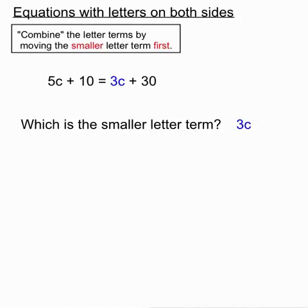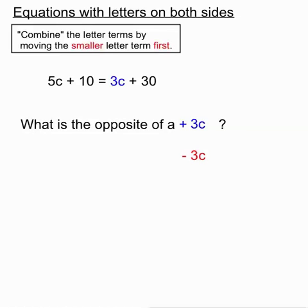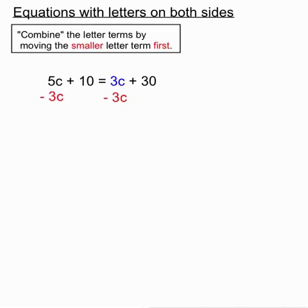We're looking to move the whole term and we know that the 3 is a positive number, so we consider the whole term to be plus 3c. What's the opposite of adding a term 3c? Subtracting a term 3c. So in order to move that 3c term and combine it with the 5c term, we're going to subtract 3c from both sides of the equation.